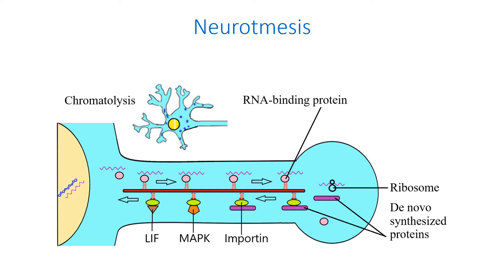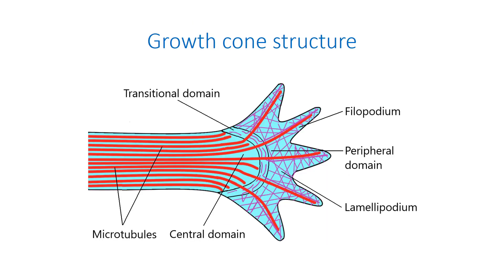De novo synthesized proteins include transcription factors that undergo retrograde transport via binding to the importins. The growth cone is a dilated axonal tip capable of interpreting extracellular guidance cues, transducing them into changes in the cytoskeleton, and guiding axons to their proper destination.